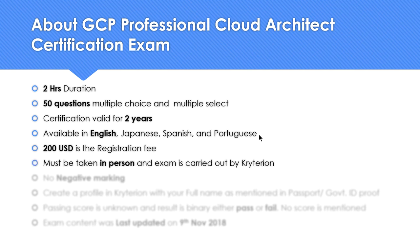This exam has to be taken in person — there's no remote option. You have to go to a specific examination center carried out by Criterion, which is one of the partners of Google. There is no negative marking, meaning you can answer all 50 questions. If you are not able to get right answers, do a calculated guess.